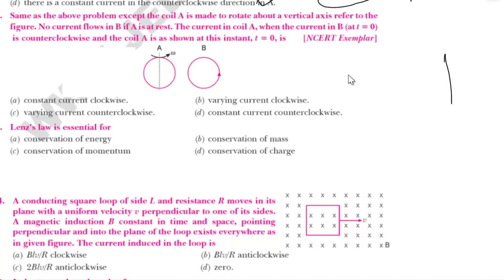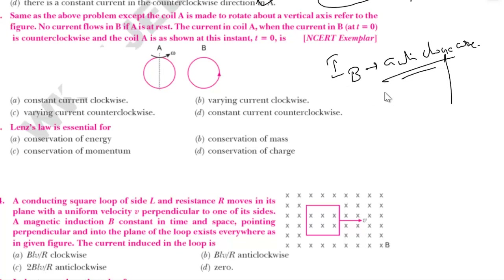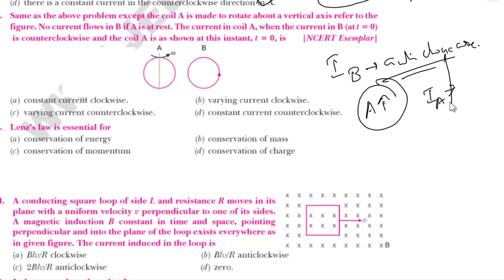Current in B is in the anticlockwise direction. As per Lenz's law, when coil A starts rotating and is moving, current in A will remain constant in the clockwise direction. B is moving anticlockwise, and while A starts moving, current in A will remain constant in the clockwise direction. So the answer is: current in A is constant in the clockwise direction.